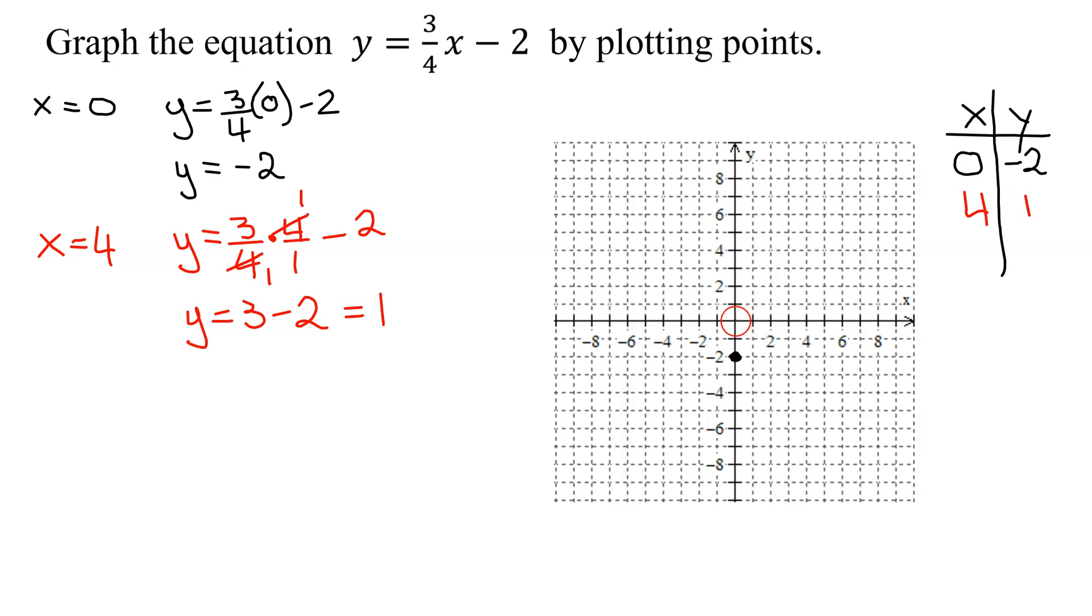So let's graph that point. When x is 4, 1, 2, 3, 4, y is positive 1, so I go up 1. There is my next point.